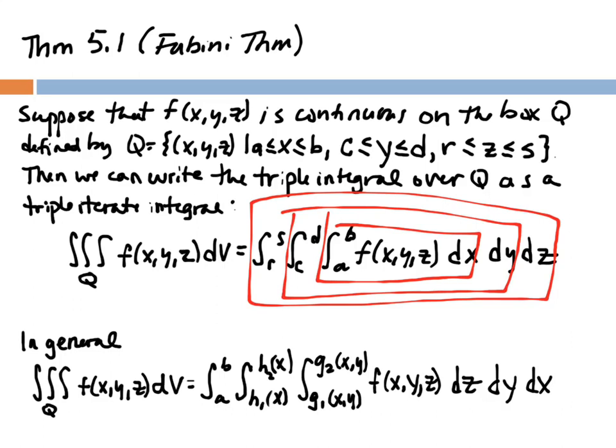This specific form is over a box Q, but in general the limits don't have to be numerical constants. In the general form, the outermost integral has numerical limits a and b — though x doesn't have to be the outermost variable; integration can go in any order. The middle limits are h₁(x) to h₂(x), functions of x, and the innermost limits are g₁(x,y) to g₂(x,y), functions of both x and y.